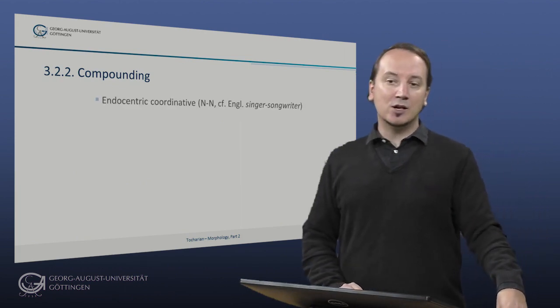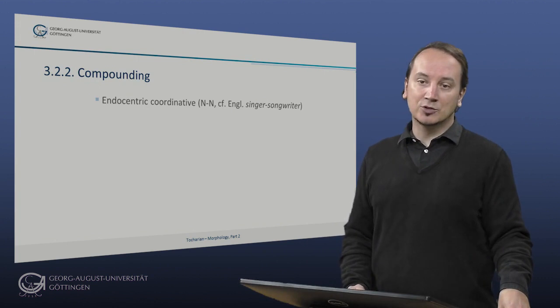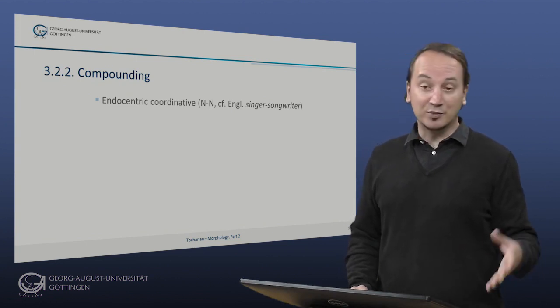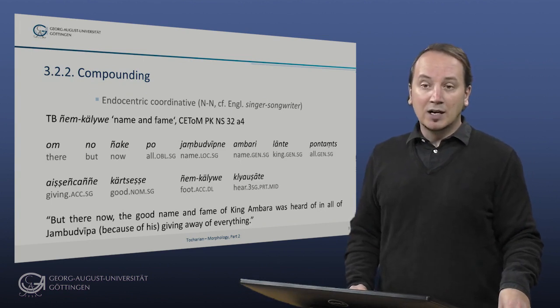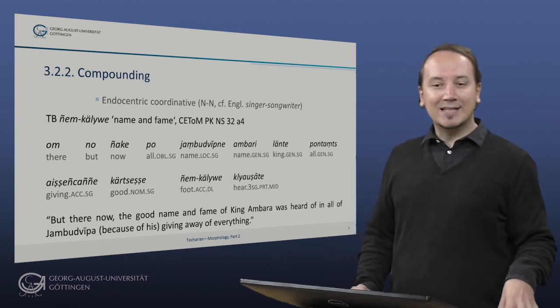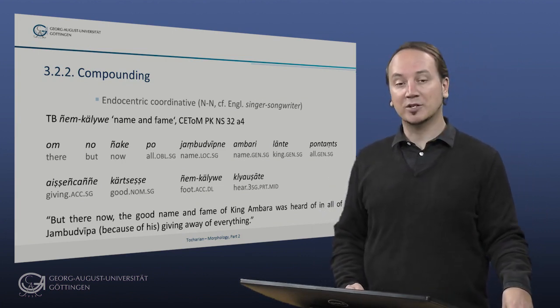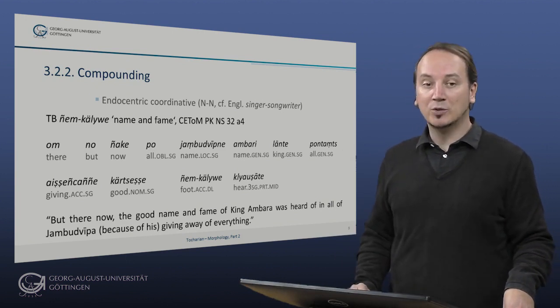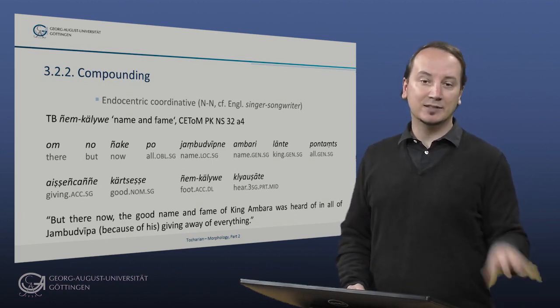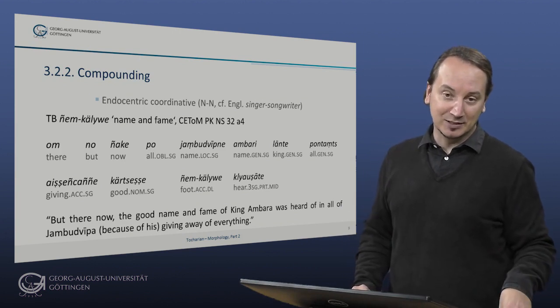Good, next in our little survey are endocentric coordinative compounds or dvandvas. In these the two constituents of the compound are linked by a coordinating relation, usually conjunctive of course. This is the type of English singer-songwriter. Our Tocharian compound here is Niemkylve, literally name and fame. The second member of the compound is of course cognate with Vedic Sanskrit Shravas fame and Homeric Greek Kleos fame, which are usually collocated with Vedic Sanskrit Akshitam and Greek Aftiton, that means imperishable. And the old Indo-European poetic concept of imperishable fame and potentially name might be reflected in this Tocharian compound here.